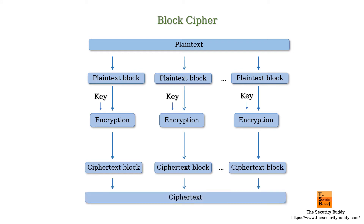In order to encrypt arbitrary length data using a block cipher, we need to divide the plain text into several fixed length blocks. The length of a block depends on the block cipher algorithm you are using.